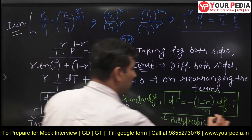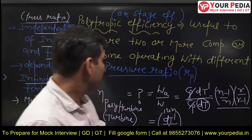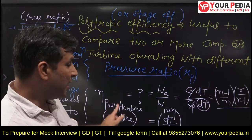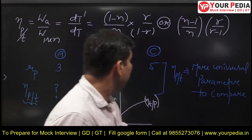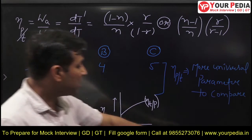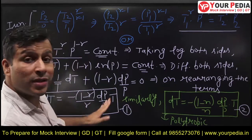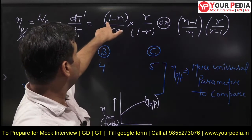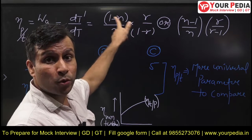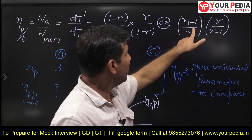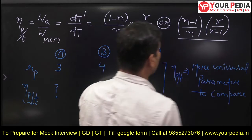Now, suppose equation 1 is dT-dash and equation 2 is dT. If we divide dT-dash by dT - because polytropic efficiency is nothing but the ratio dT-dash / dT - the terms (dP/P · T) cancel out. We get an expression (1−n)/n × γ/(1−γ). Taking out minus from both sides, we get (n−1)/n × γ/(γ−1). So this is the final expression for polytropic efficiency.